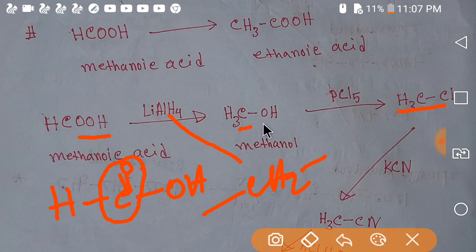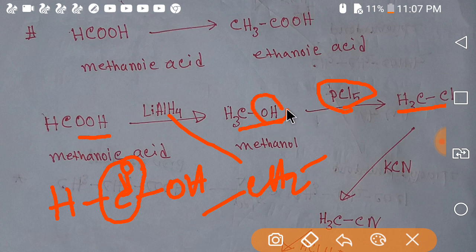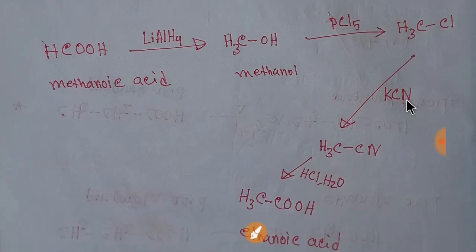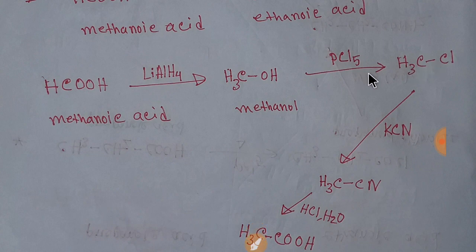We are getting methanol, and if we add phosphorus pentachloride to methanol, then this OH will be replaced by Cl and we will get methyl chloride. This is methyl chloride, which is the mother compound to increase the number of carbon in a chain.